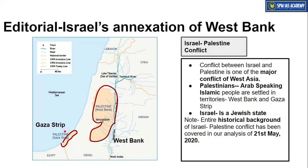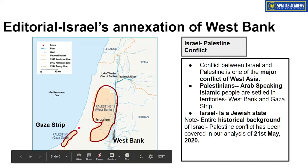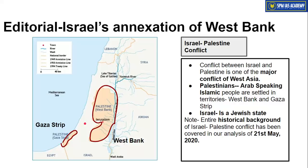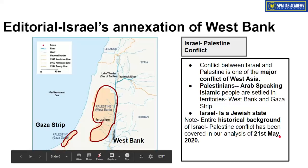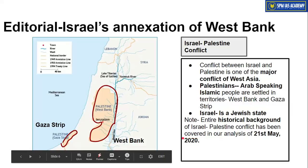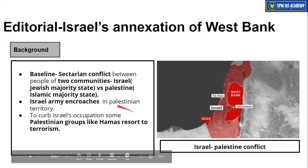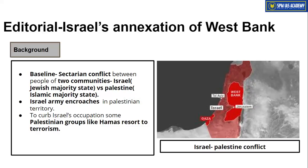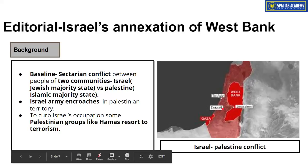Israel and Palestine are situated in West Asia, and the conflict between them is one of the major reasons behind instability in the region. There is a complete sectarian difference between Palestinians and Israelis: Palestinians are Arabic-speaking Islamic people, while Israelis are Jewish people. There has been historical hostility between them for a long time. The historical background of this conflict was covered in our newspaper analysis of 21st May 2020. In brief: Palestinian people — who follow the Islamic community — live in the West Bank and Gaza Strip, while Israeli people — who belong to the Jewish community — live in the remaining territory.